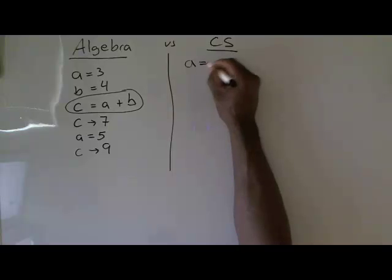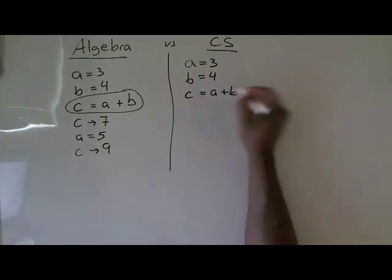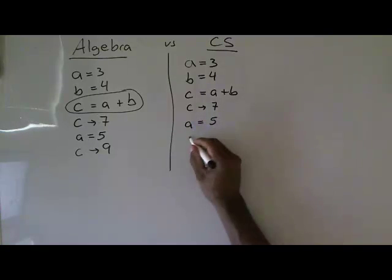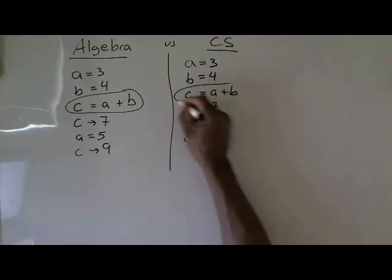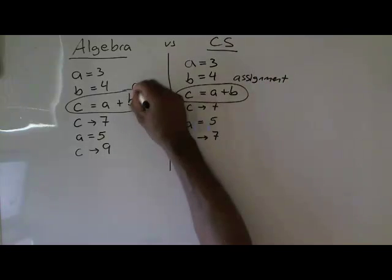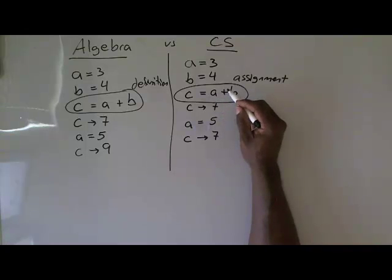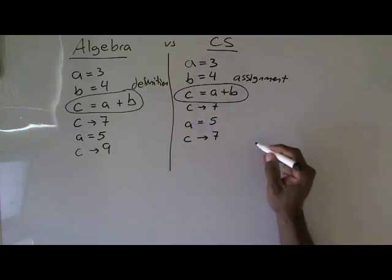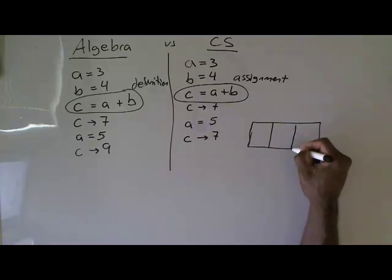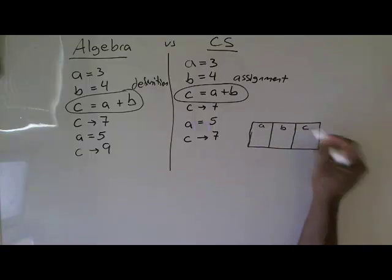Furthermore, if I change A to 5, then because this definition defines how C is defined henceforth and forevermore, C now gets the value of 9. In computer science there's a difference because of the way variables are assigned. If I do A equals 3 and B equals 4, and I say C equals A plus B, C does have the value of 7. But if I change A to 5, C still retains the value of 7. Variables are names of memory locations — one for A, one for B, and one for C.